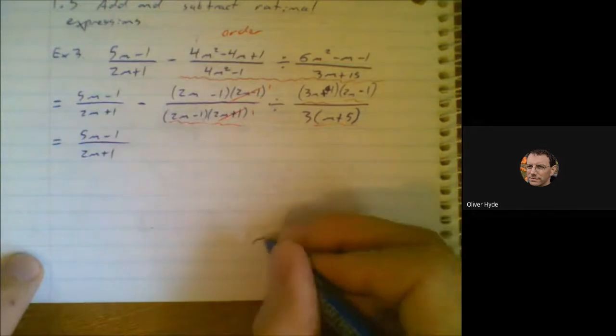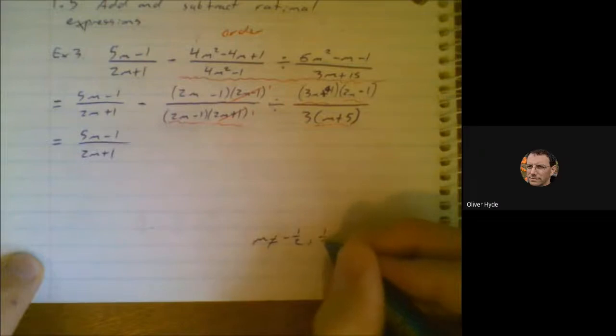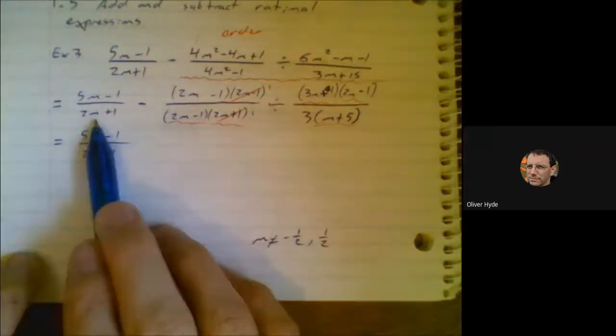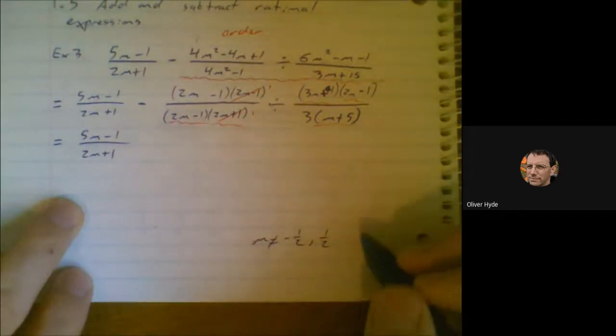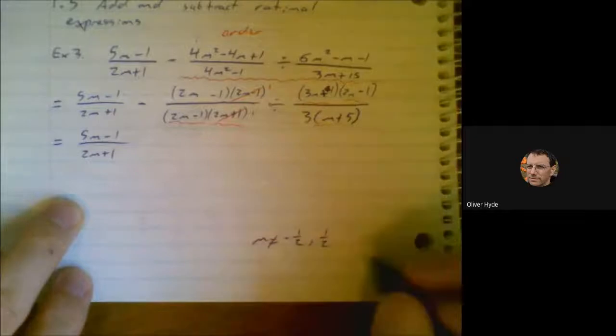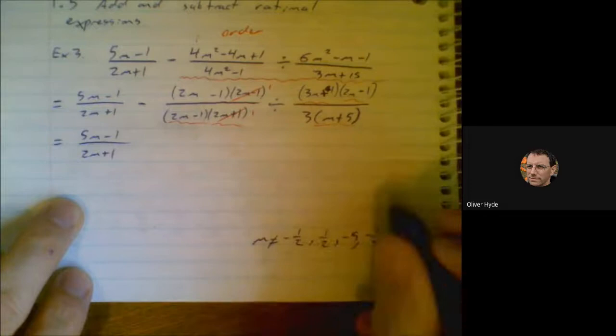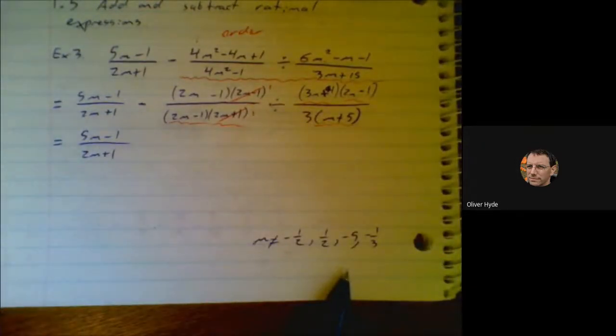This can't be 0. So if 2m plus 1 can't equal 0, that means that m can't equal negative 1 half. There's the conjugate of that. So positive 1 half. I already stated that restriction right there. Oh, this is going to come back and haunt me because I actually already had a common denominator. I'm going to pretend I didn't notice that then. And we'll just deal with that. Let's see. This can't equal 0. So m can't equal negative 5. That can't equal 0. m can't equal negative 1 third. And I already caught the 1 half.